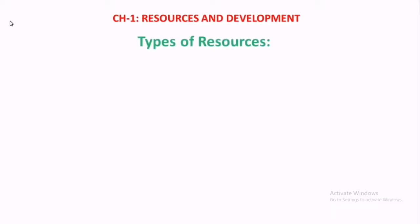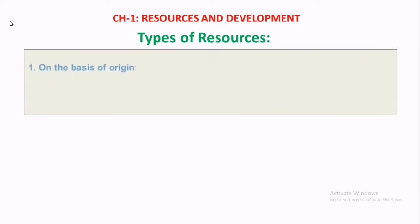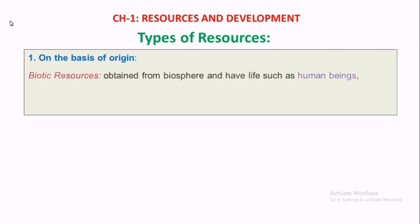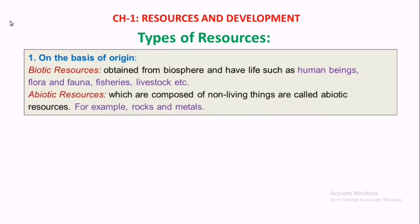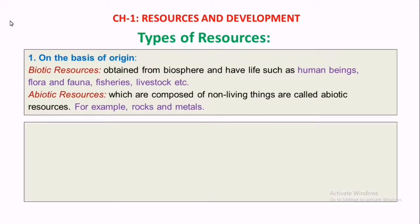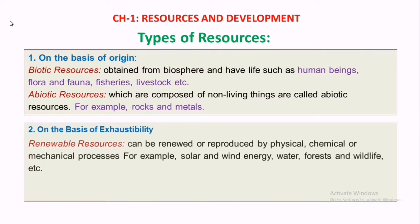Chapter one: Resources and Development. First, the classification of resources — that is, types of resources. On the basis of origin, there are two types: biotic resources and abiotic resources. Anything having life is a biotic resource; non-living things are called abiotic resources.